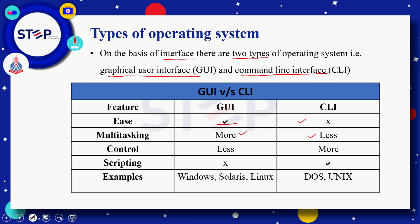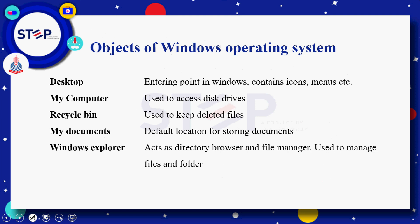جبکہ اگر ہم اپنے resource پر control چاہتے ہیں تو command line interface جو ہے as compared to GUI ہمیں زیادہ control provide کرتا ہے، اور scripting کا feature بھی CLI provide کرتا ہے جبکہ GUI operating system اس کی facility provide نہیں کرتا۔ GUI based operating system کی examples میں Windows، Solaris، Linux ہیں، جبکہ CLI کے اندر DOS اور Unix ہوتے ہیں۔